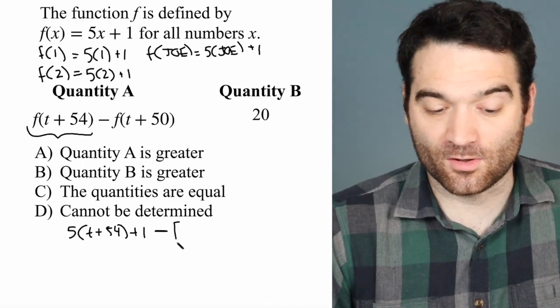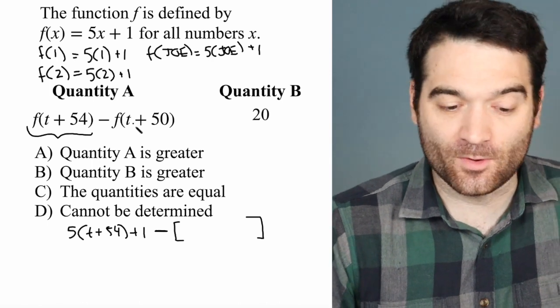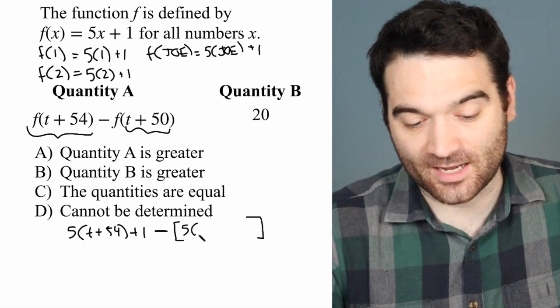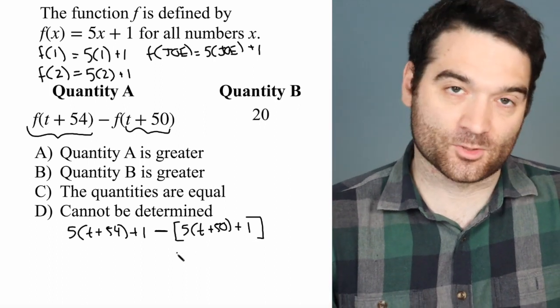we can put this all in parentheses just to keep it all together, f of t plus 50, well, I'm going to plug t plus 50 in for x once again. So that's 5 times t plus 50 plus 1.